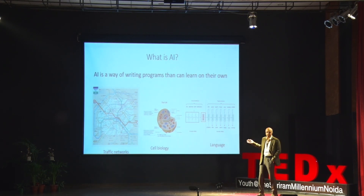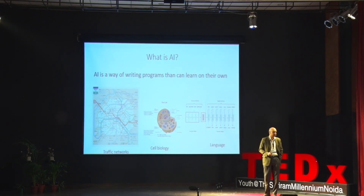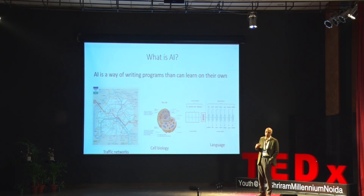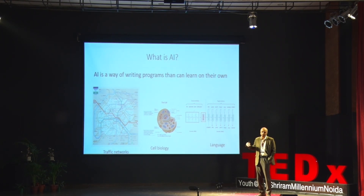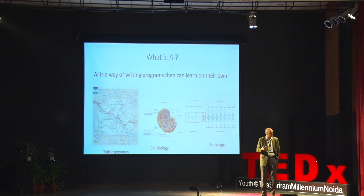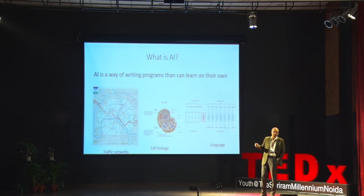Let me just start with the simplest explanation of AI — that's all the message you need to remember by the end of the talk. AI is nothing magical. It is actually a different way of programming — a way of writing programs so that the program can learn on its own. Instead of just programming manually, the program can learn, write more programs, hopefully good programs, and then evolve.